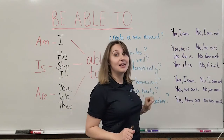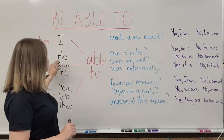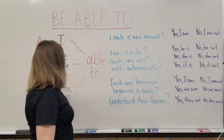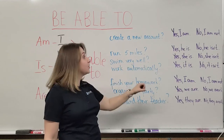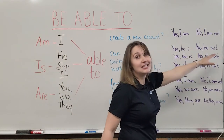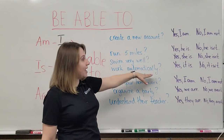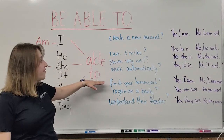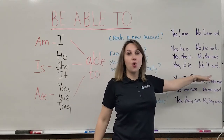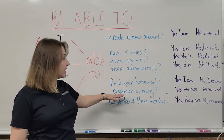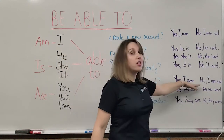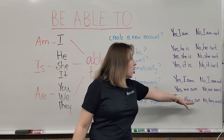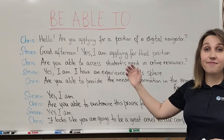The positive answer is 'Yes, I am' and the negative is 'No, I am not.' 'Is he able to run five miles?' — 'Yes, he is' or 'No, he isn't.' 'Is she able to swim very well?' — 'Yes, she is' or 'No, she isn't.' 'Is it able to work automatically?' — 'Yes, it is' or 'No, it isn't.' 'Are you able to finish your homework?' — 'Yes, I am' or 'No, I am not.' 'Are we able to organize a party?' — 'Yes, we are' or 'No, we aren't.' 'Are they able to understand their teacher?' — 'Yes, they are' or 'No, they aren't.'